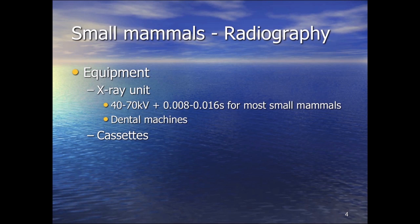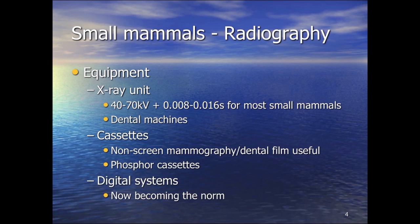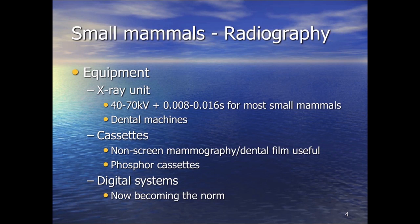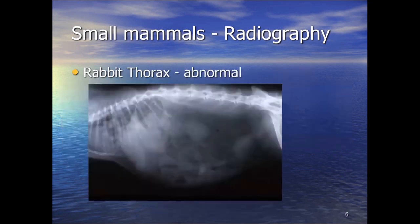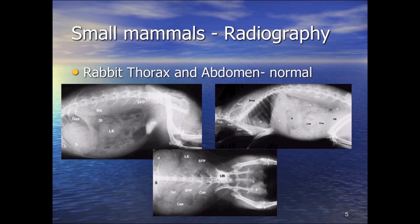The majority of cassettes are now digital — DR and CR systems. Mammography and dental film are still used, and self-developing film with dental machines can give a high level of detail for very small animals. Digital systems have improved, though the problem is that you can over-interpret some images.